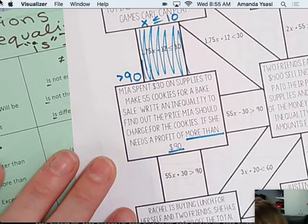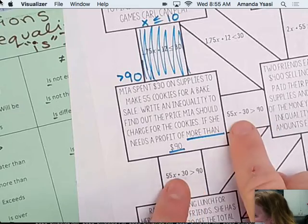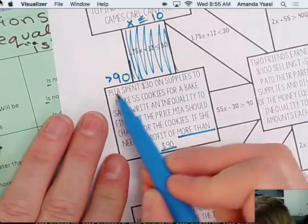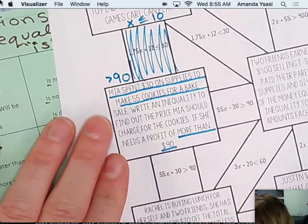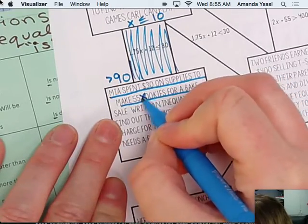So we need to look and see. Here are two choices. They both have greater than $90. What they have different is the plus 30 or minus 30. So let's look and see. Mia spent $30 on supplies. Make 55 cookies. So X is the cookie. So 55X.